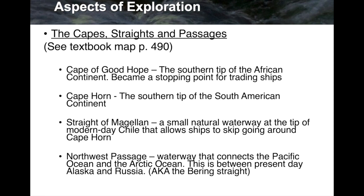First is the Cape of Good Hope. This is the southern tip of the African continent, down where South Africa is today. It became a stopping point for trading ships — a natural place that ships would stop as they came around to the other side of that continent.